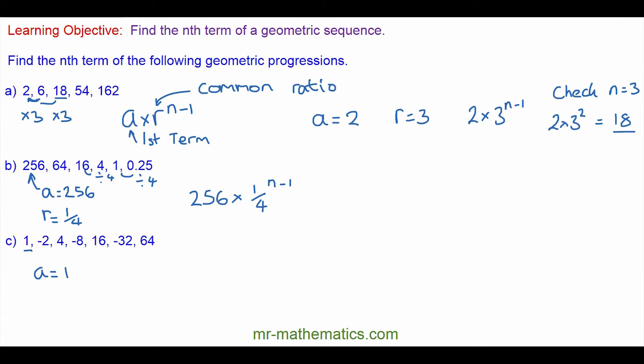And the last sequence: the first term is 1, so a equals 1, and the common ratio or multiplying factor is negative 2. So the sequence becomes a, which is 1, times negative 2 to the power of n minus 1.